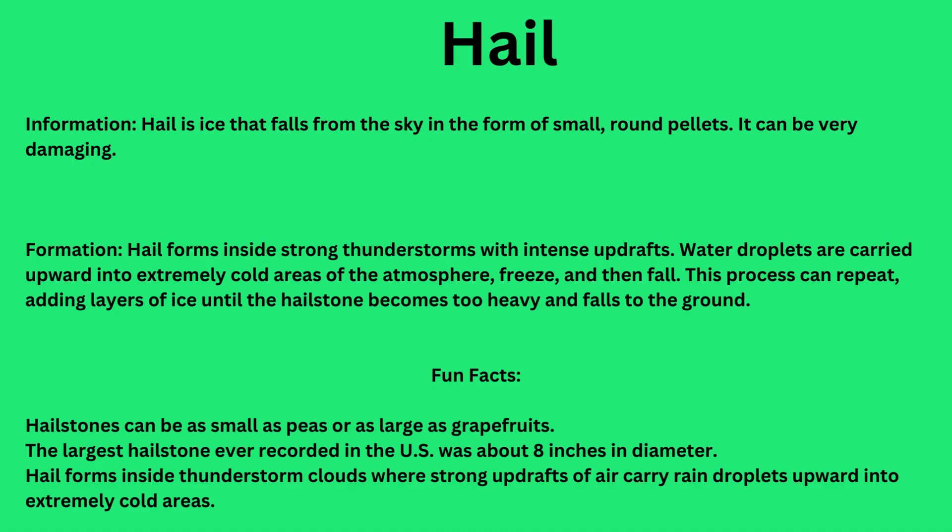Hail. Hail is ice that falls from the sky in the form of small, round pellets. It can be very damaging. Hail forms inside strong thunderstorms with intense updrafts. Water droplets are carried upward into extremely cold areas of the atmosphere, freeze, and then fall. This process can repeat, adding layers of ice until the hailstone becomes too heavy and falls to the ground.